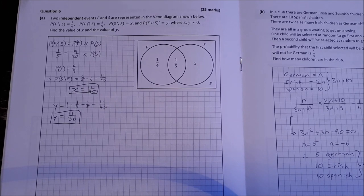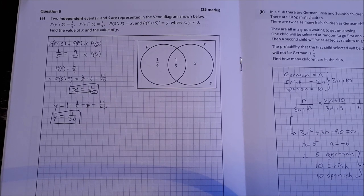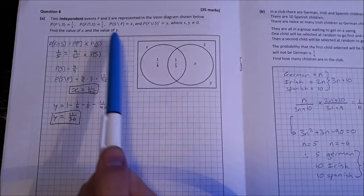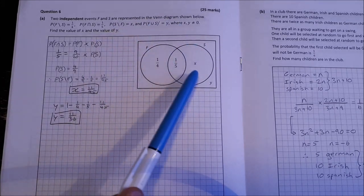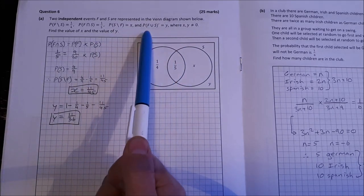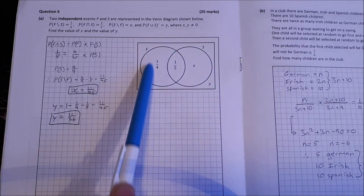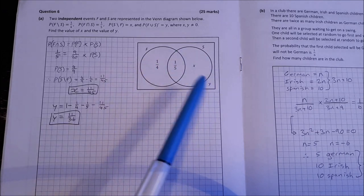Question 6. Two independent events, F and S, are represented in the Venn diagram shown below. The probability of F less S is a quarter. The probability of F intersection S is a fifth. The probability of S less F is X. And the probability of F union S prime is equal to Y. So that's everything outside of that is equal to Y. X and Y are not zero. Find the value of X and the value of Y.